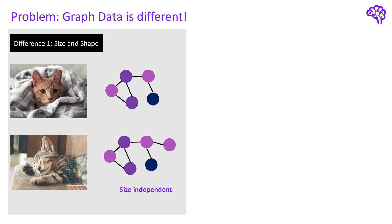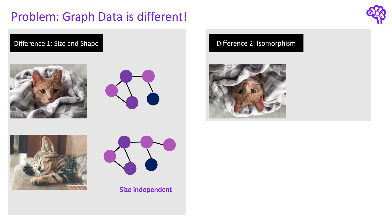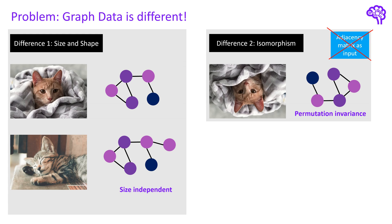Another feature of graphs — called isomorphism in graph theory — says that two graphs that look different can still be structurally identical. If you flip the image on the left you get an entirely new image, but if you flip the graph on the left, the only thing that changes is the order of the nodes. The algorithm that is supposed to handle graph data therefore needs to be permutation invariant. This is also the reason why you cannot directly use the adjacency matrix as input for a feedforward network, as it is sensitive to changes in the node order.